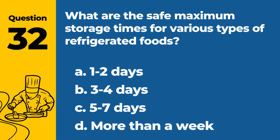Question 32. What are the safe maximum storage times for various types of refrigerated foods? a. One to two days. b. Three to four days. c. Five to seven days. d. More than a week. Answer: c. Five to seven days. This is a general guideline for the maximum safe storage time for many refrigerated foods.